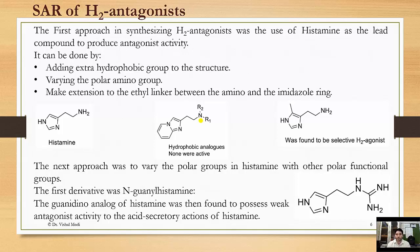For the SAR of H2 antagonists, the first approach in synthesizing H2 antagonists was the use of histamine as the lead compound to produce antagonist activity. This can be done by: (1) adding extra hydrophobic groups to the structure, (2) varying the polar amino group, and (3) making an extension to the ethyl linker between the amino and the imidazole ring — for example, extending it to propyl or butyl.